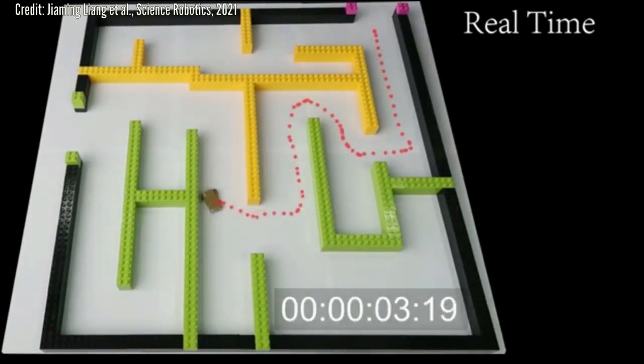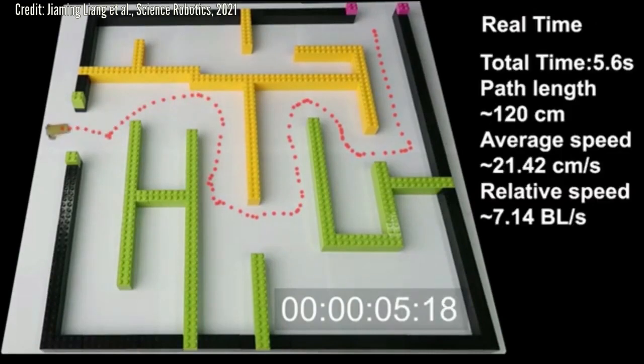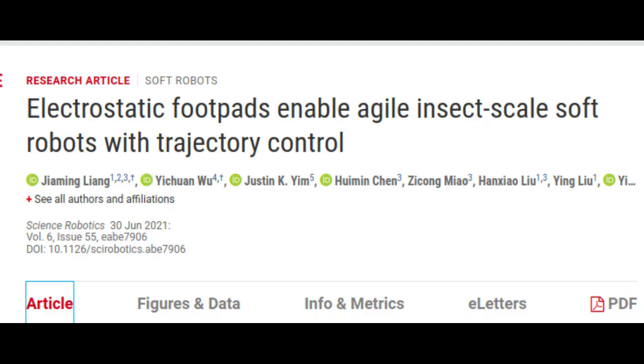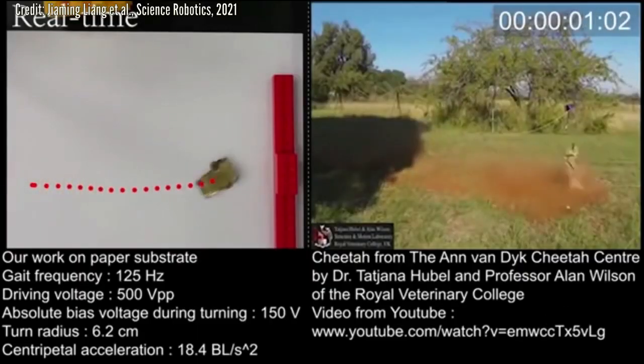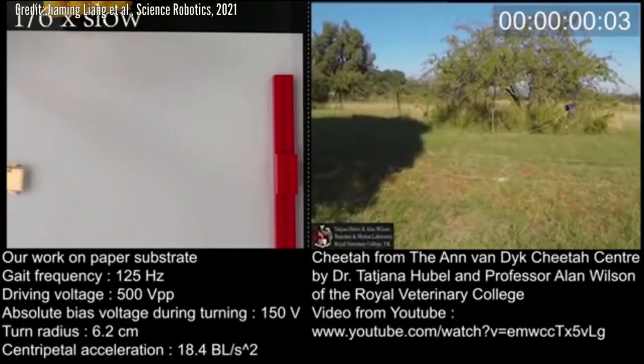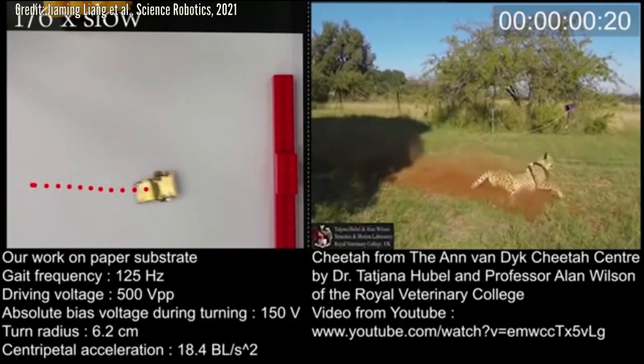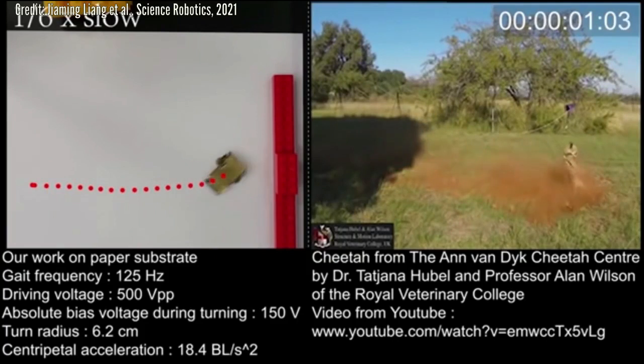In a new study, the research team added two electrostatic footpads to the robot. Applying a voltage to either of the footpads increases the electrostatic force between the footpad and a surface, making that footpad stick more firmly to the surface and forcing the rest of the robot to rotate around the foot. The two footpads give operators full control over the trajectory of the robot and allow the robot to make turns with a centripetal acceleration that exceeds that of most insects.